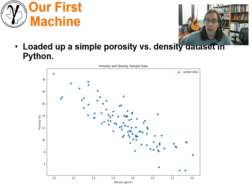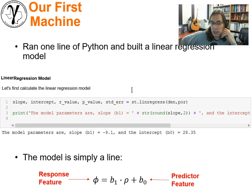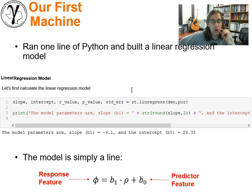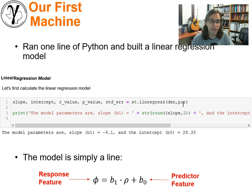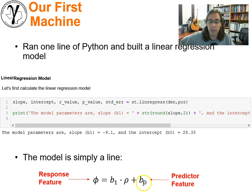We're going to start with linear regression — super easy, but it allows us to introduce a bunch of concepts. We'll go ahead and use SciPy, using the linear regress methodology to build a model. We got our predictor feature, we got a response feature, both as ND arrays. We feed them in, and out comes the coefficients of the linear regression model: the slope, the intercept, and a variety of other diagnostics. Our model is simply porosity equals a slope term multiplied by density plus a constant term.